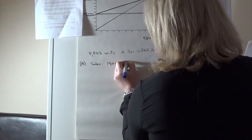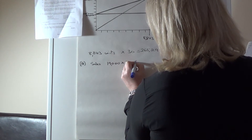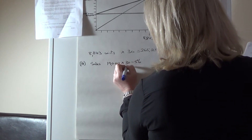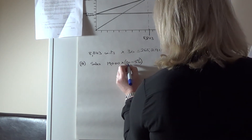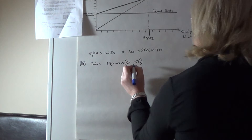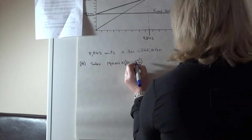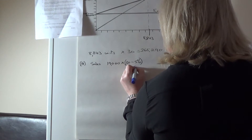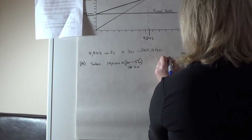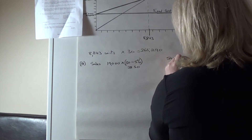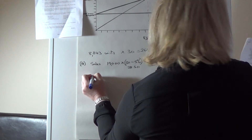The previous selling price was 30, so minus 5% gives 28.50. So 19,000 multiplied by 28.50 equals sales of 541,500. Then the variable costs: nothing in the variable cost rates has changed.